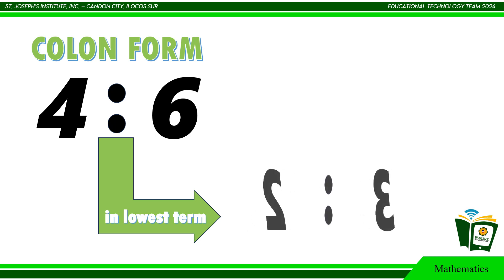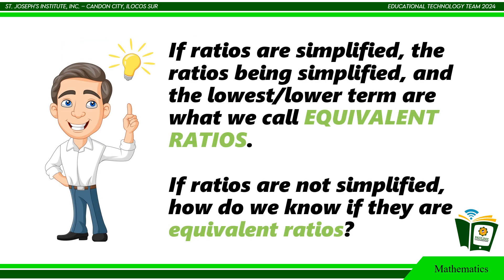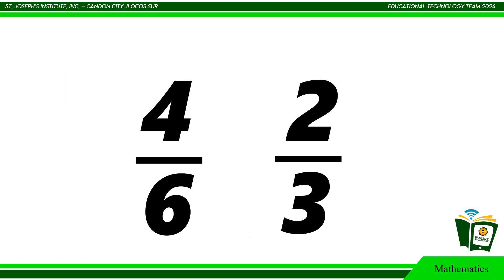If ratios are simplified, the ratios being simplified and the lowest or lower term are what we call equivalent ratios. If ratios are not simplified, how do we know if they are equivalent ratios? Let us focus on the given example. 4 over 6 and 2 over 3. To find if they are equivalent or not, do cross multiplication.